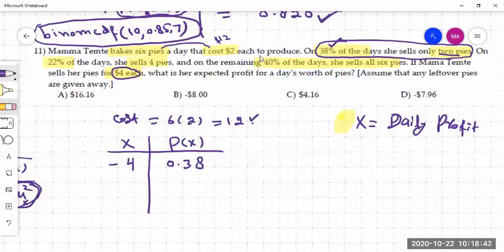Then 22% of the days, she sells four pies. So when she sells four pies and each pie for four dollars, she earns sixteen dollars. And out of sixteen dollars, her cost is twelve dollars. So it means that sixteen minus twelve is four. So her profit would be four dollars for 22% of the days. So 0.22.